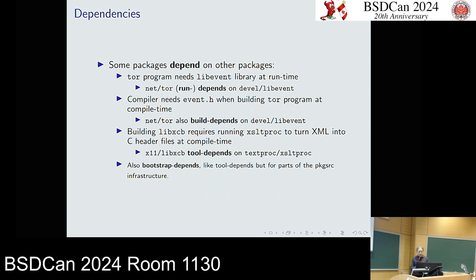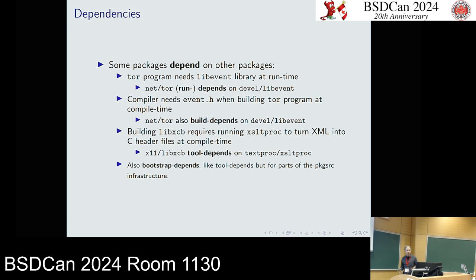When you want to build a collection of software, it's never just one program — you're always going to have libraries, tools, and other things it pulls in. So we have to be careful about building and running the right dependencies. For example, the Tor program relies on libevent at runtime, so when you execute Tor on your 32-bit PowerPC network appliance, there has to be a libevent.so that the runtime loader can load. That's a runtime dependency. When building Tor on your x86 laptop, the x86 libevent.so isn't used.